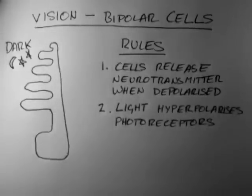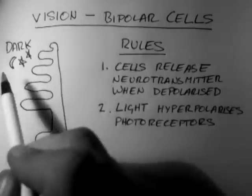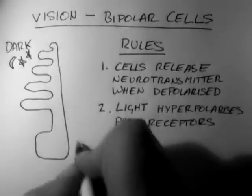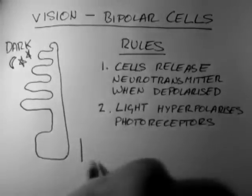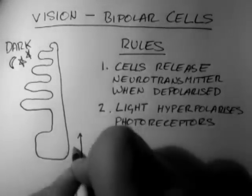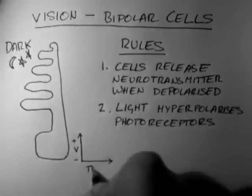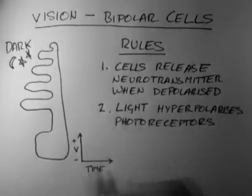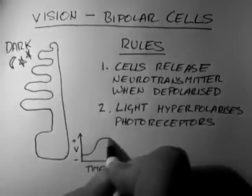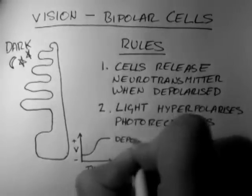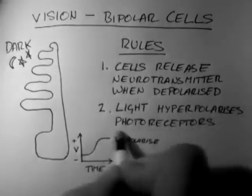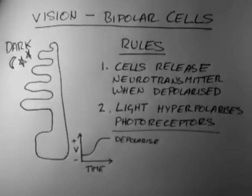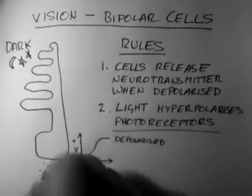So let's apply these to our photoreceptor. We'll look at what happens in the dark to the voltage inside the photoreceptor. If light hyperpolarises photoreceptors, then dark should depolarise photoreceptors. So this photoreceptor must be depolarised. Our next rule is that cells release neurotransmitter when depolarised, and so this cell is releasing neurotransmitter.